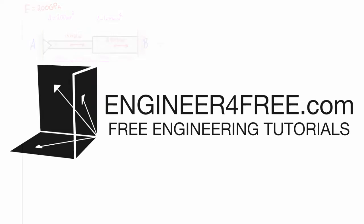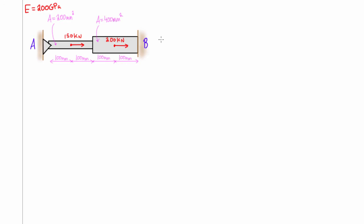Welcome back. In this video we are doing another statically indeterminate problem and we want to solve for the reaction forces at A and B. If we do the sum of forces in the x-direction, we have the horizontal reaction at A and the horizontal reaction at B, and we also add in 150 kilonewtons and 200 kilonewtons, giving us 350 kilonewtons. That all has to equal zero for static equilibrium. We have two unknowns in one equation, so this is definitely statically indeterminate.